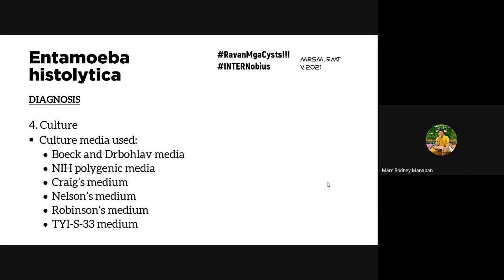Serological tests include: indirect hemagglutination test (IHA) — a titer ≥1:256 is diagnostic of amoebic liver abscess; indirect fluorescent antibody test (IFA) — a titer ≥200 is diagnostic. Also available: latex agglutination test and ELISAs, which have greater sensitivity. RIDA screen detects IgG antibodies; Prospect E. histolytica microplate assay detects E. histolytica-specific antigens in fecal samples.